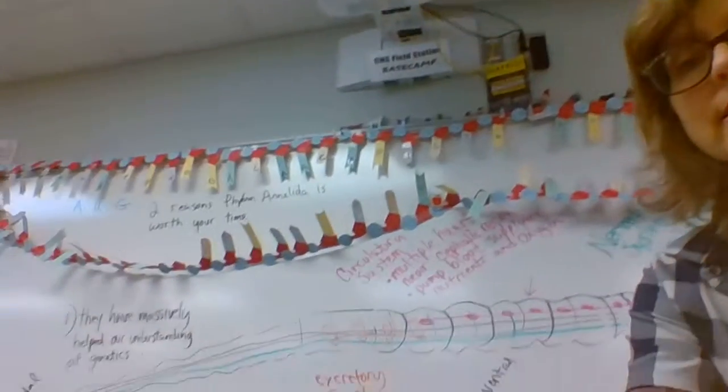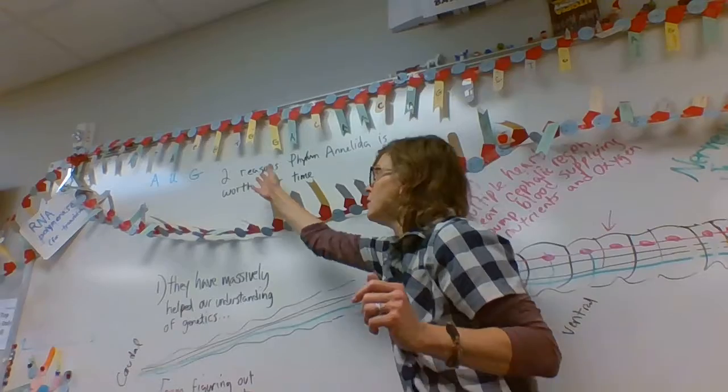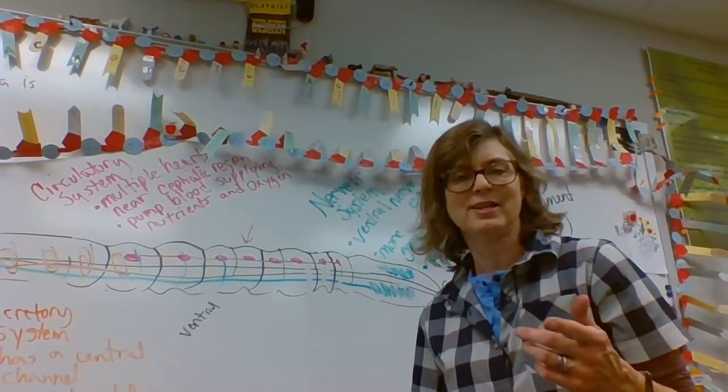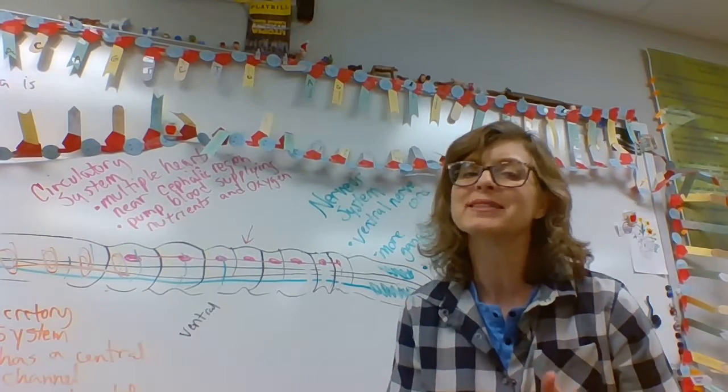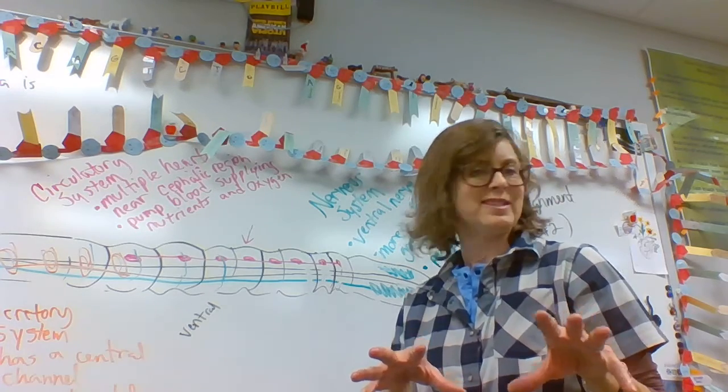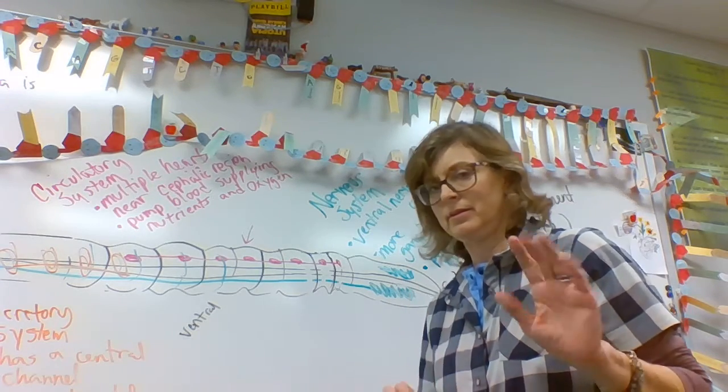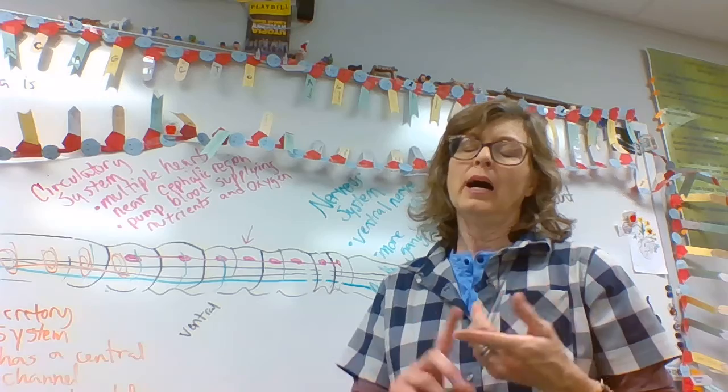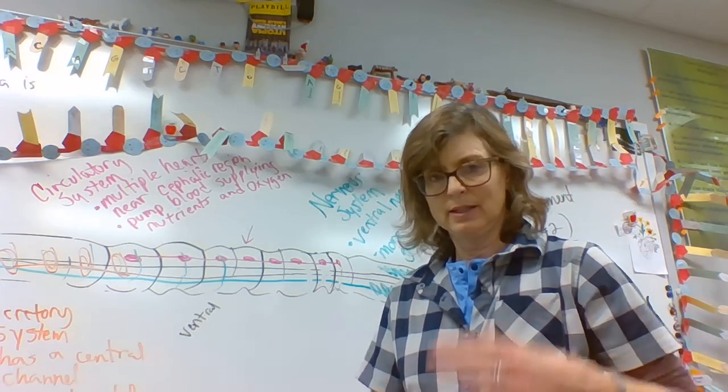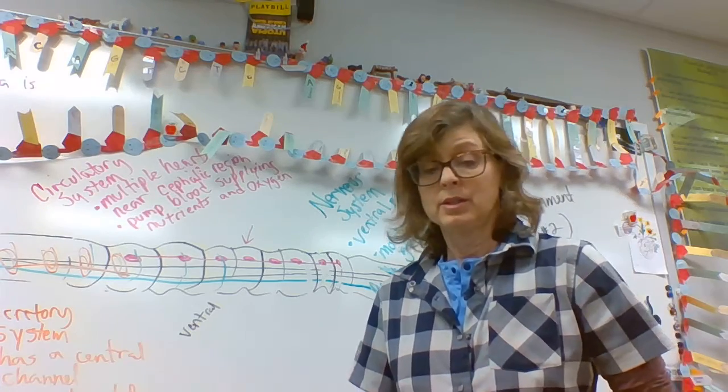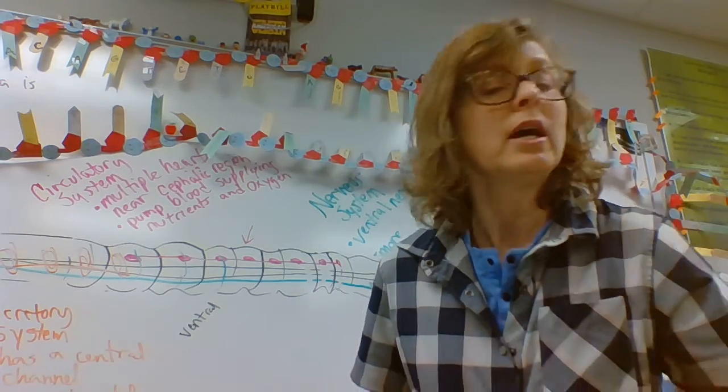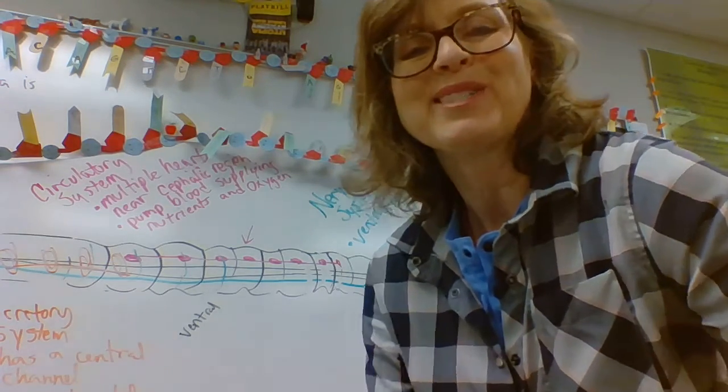And we see that with the nervous system and we see it with the excretory system. And then what we'll see happens in more complex animals is that instead of having multiples, we're going to start scrunching some of these things together. Instead of multiple little hearts, let's make a big complex heart and use that. I think that's enough for worms for now. I am going to put out to you some nerdy homeobox information. I'll give you two very short videos on it and then a little bit of written material.